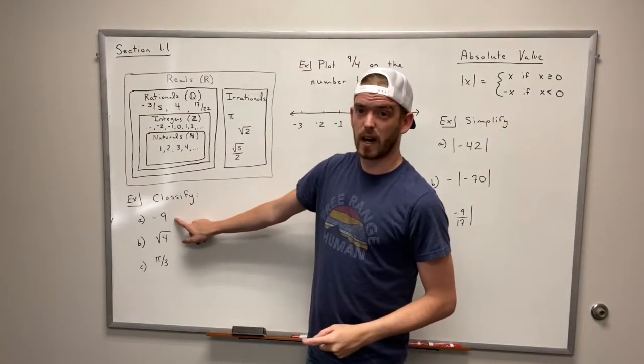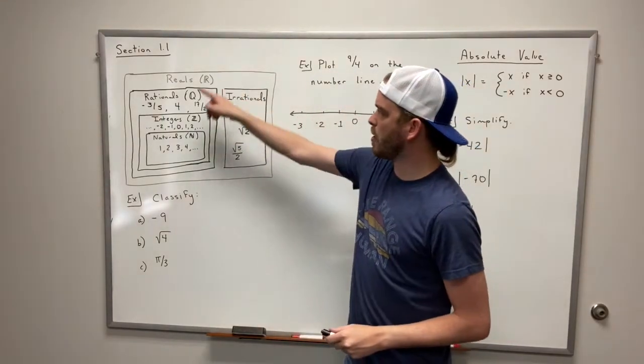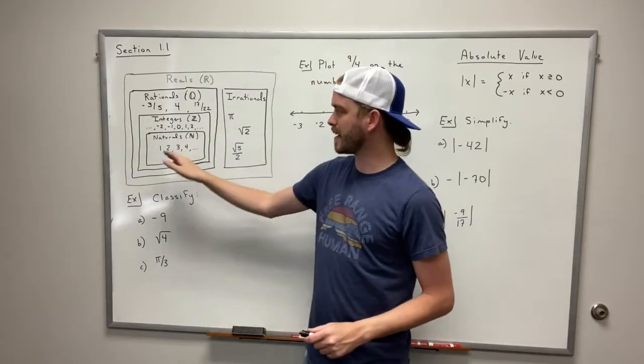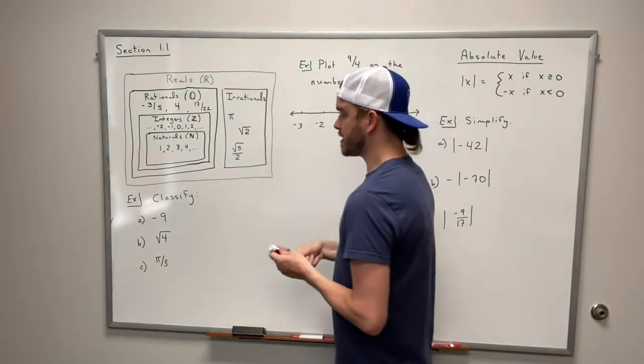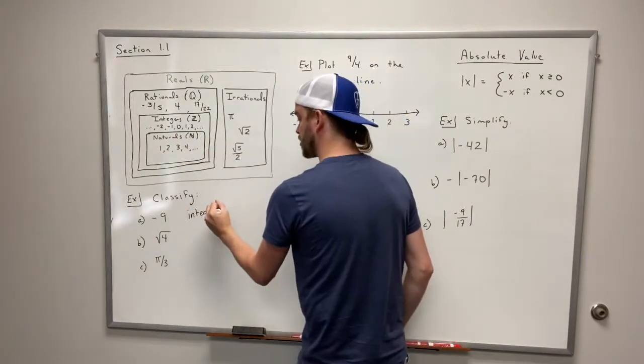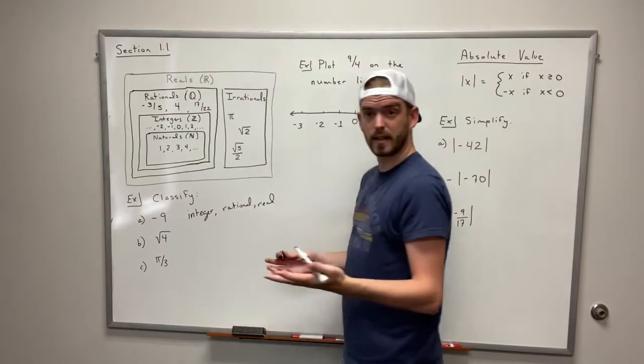So let's start off with negative 9. If we look at negative 9 the smallest one that that's going to fit in is the integers. It's not a natural number because it's negative but it is an integer. So that means it's going to be an integer, a rational number, and a real number. And that's our answer.